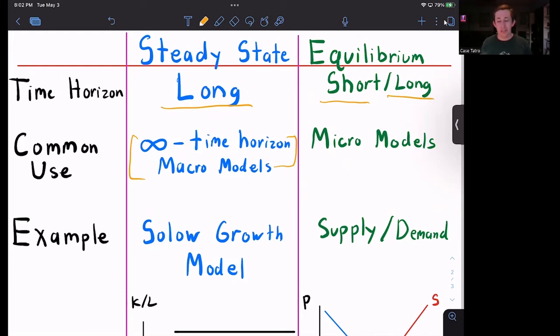Equilibrium we said could be both. So we're generally thinking about some micro models. So when we think about supply and demand, if supply or demand shifts, we know that price adjusts instantly and we are right back into an equilibrium. That's generally a short run equilibrium. We could have a longer run equilibrium.